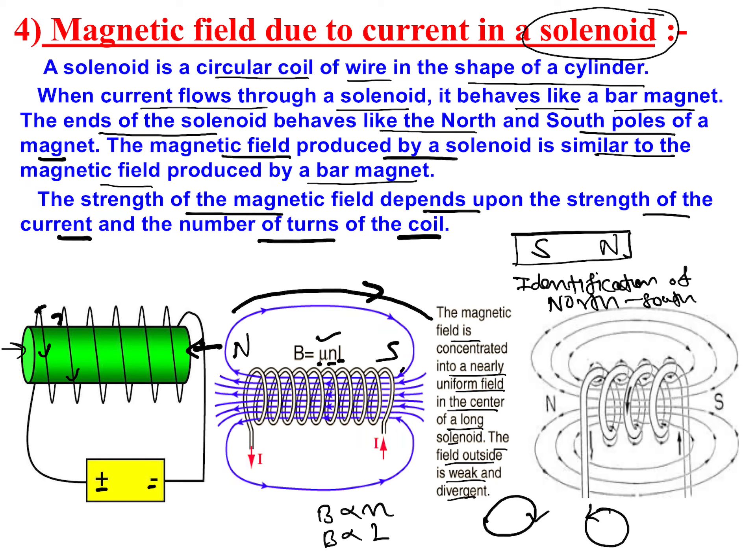If you are facing a pole which has the direction of electric current clockwise, it means it is the south pole. And if it is anti-clockwise, then it is the north pole. This is how you can remember it.